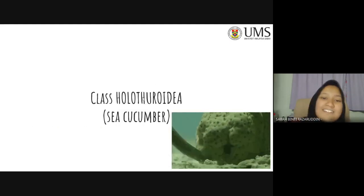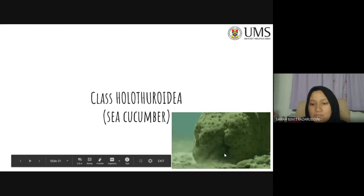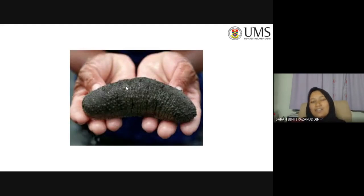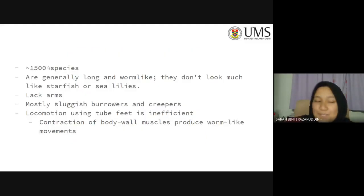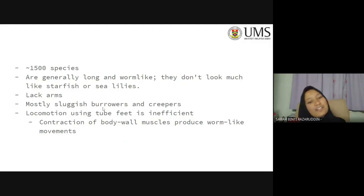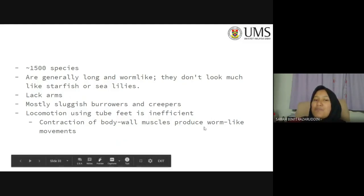Next is class Holothuroidea — the sea cucumber. They look like sea slugs — they're the slugs of the ocean. There are around 1,500 species and they are generally long and worm-like, looking very different from starfishes or sea lilies because they evolved quite differently. They lack arms entirely. They are mostly sluggish burrowers and creepers, their tube feet locomotion is inefficient, and the contraction of body wall muscles produces worm-like movements.